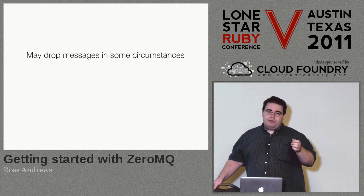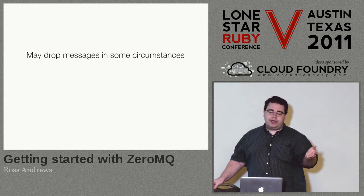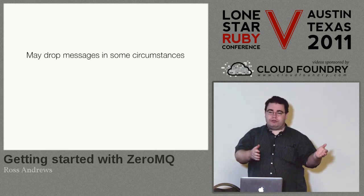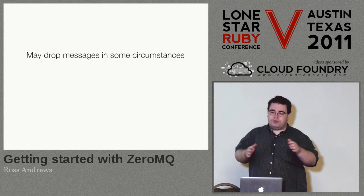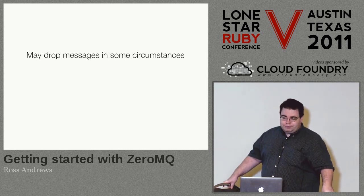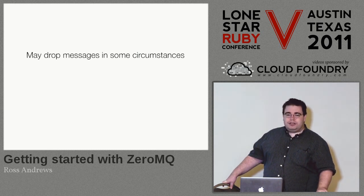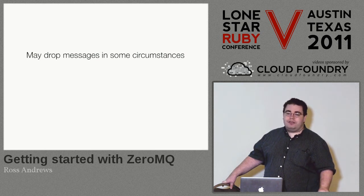The classic case is you open a pub socket, drop ten thousand messages on it, and close again. Unless you wait for something to connect as a subscriber first, those messages are going to go nowhere. ZeroMQ will say: you told me to send this, but no one's going to receive it — done, sent, as far as you're concerned. So if it's vitally important that your message gets there, don't use pub-subscribe. Use request-reply and get back an acknowledgment that you actually got the message.